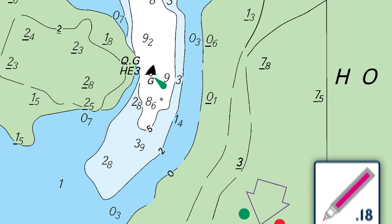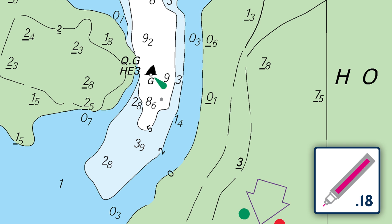Using a magenta 0.18 pen, draw a small circle on the marked spot. Then draw a neat arrow to link the existing position of the buoy with the new position.